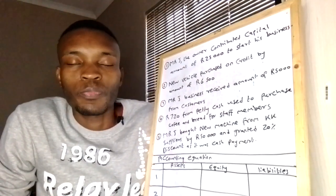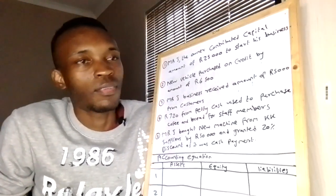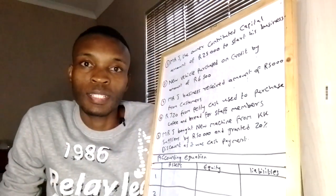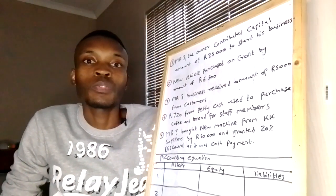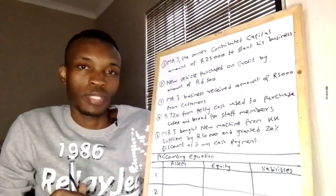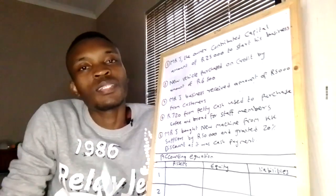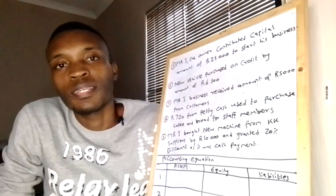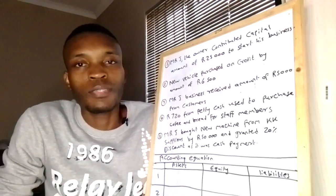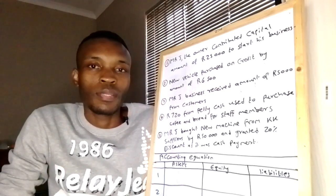In this video I want to give you a clear explanation on how you should do your accounting equation. The accounting equation is very simple. The first step that you have to do is know what falls under asset.